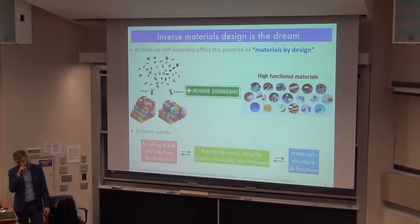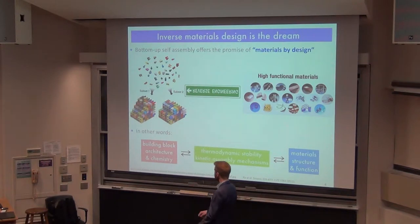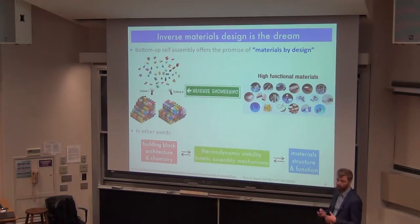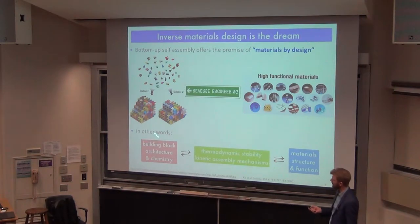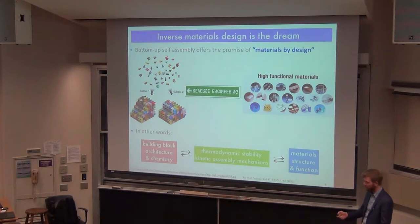The first story is motivated by soft materials engineering. The idea is that you'd like to design high-functional materials of particular structure or function, and one way of doing that is through self-assembly. Top-down processing techniques are fraught with difficulty for nanoscale materials, so one approach is designing building blocks with particular architectures and chemistries such that they spontaneously assemble materials with the desired functionality. How do we design these building blocks to program them to assemble materials with the desired structure and function?